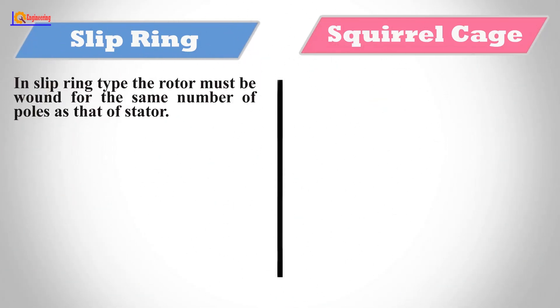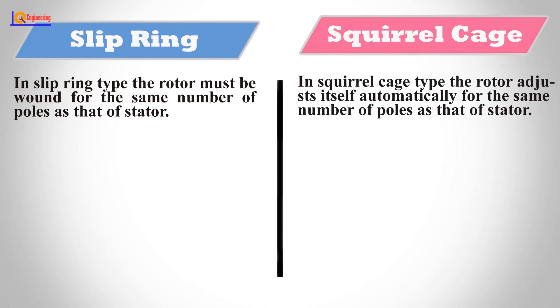In slip ring type, the rotor must be wound for the same number of poles as that of stator. In squirrel cage type, the rotor adjusts itself automatically for the same number of poles as that of stator.